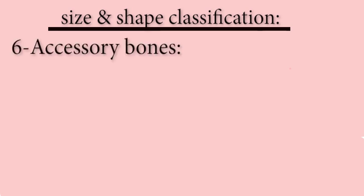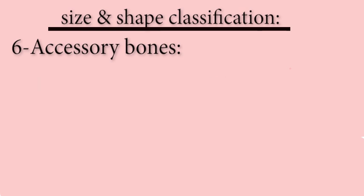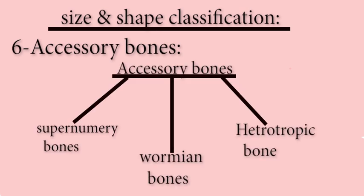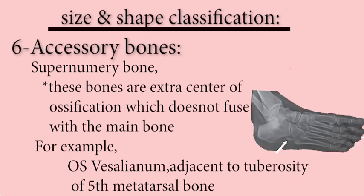The last group of bones is accessory bones. These are not always present in the body. Accessory bones are further divided into three groups. Supernumeric bones are extra centers of ossification which do not fuse with the main bone. For example, os vesalianum, which is present adjacent to the tuberosity of the 5th metatarsal bone.